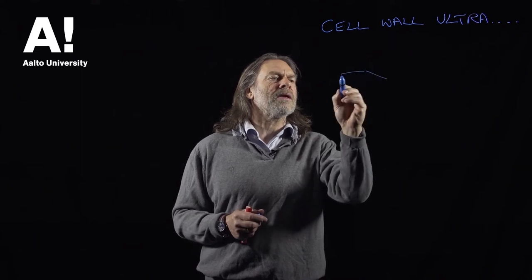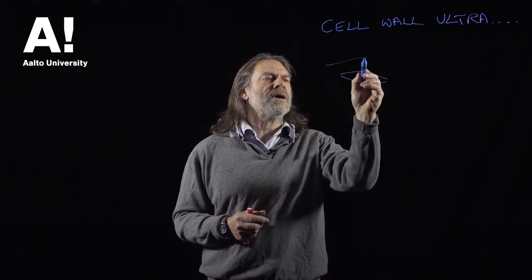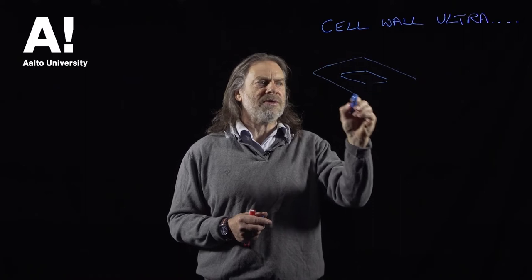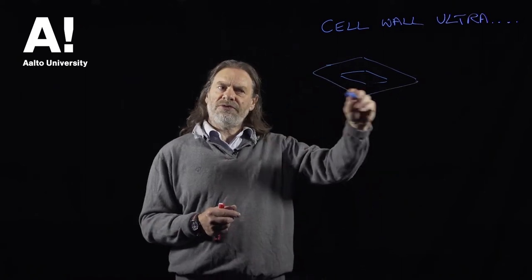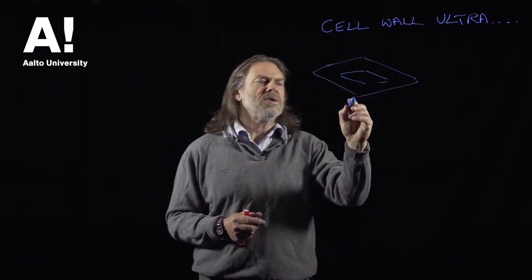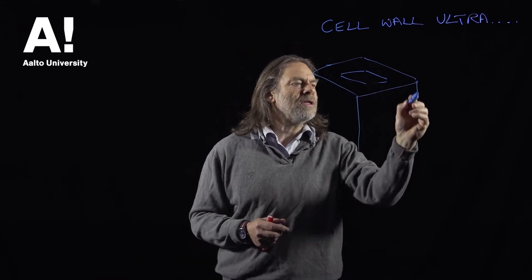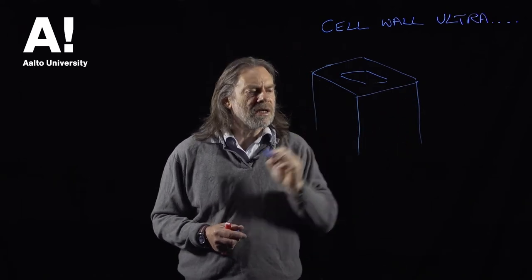So the structure of a cell wall, if we look down a microscope, a cross section of a cell wall, it looks something like this. There are different layers to the cell wall which I won't go into in this particular lecture.